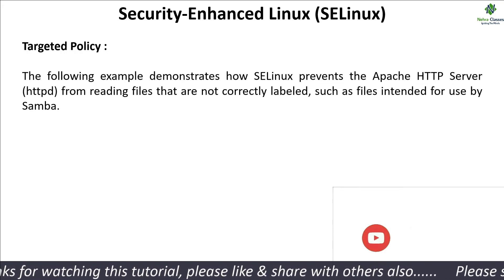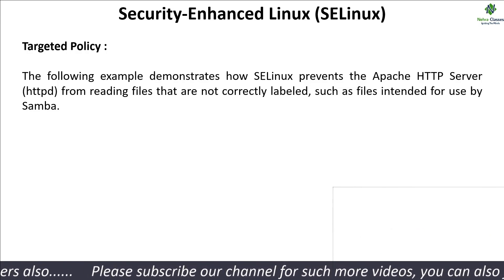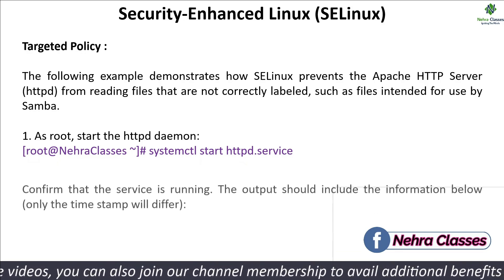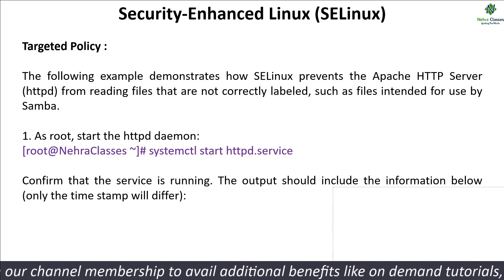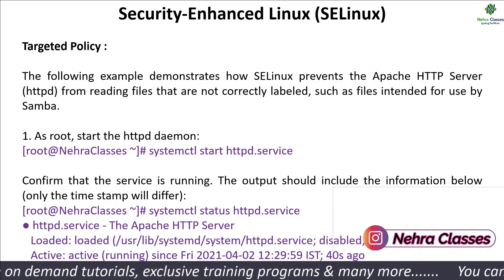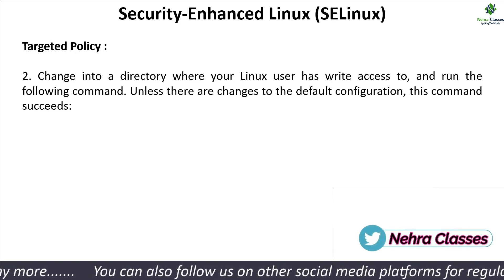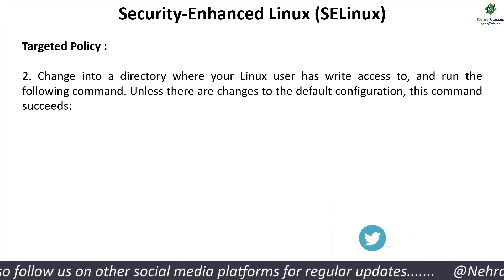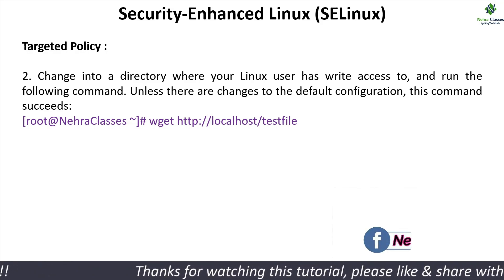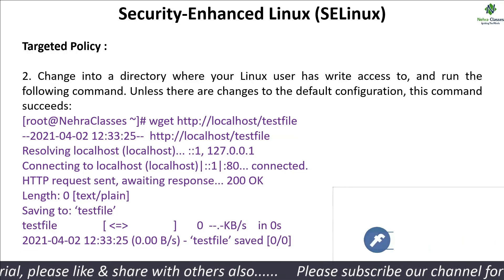The following example demonstrates how SELinux prevents the Apache httpd server from reading files that are not correctly labeled — such as files intended for use by Samba. First, we start the httpd service, then confirm it is running using the systemctl status command. After verifying it is up and running, we change to a directory where the SELinux user has the right access and execute the wget command: wget http://localhost/testfile. This command will download the test file locally.